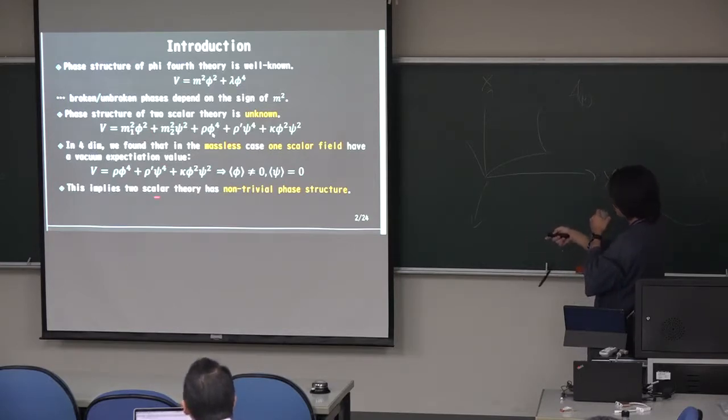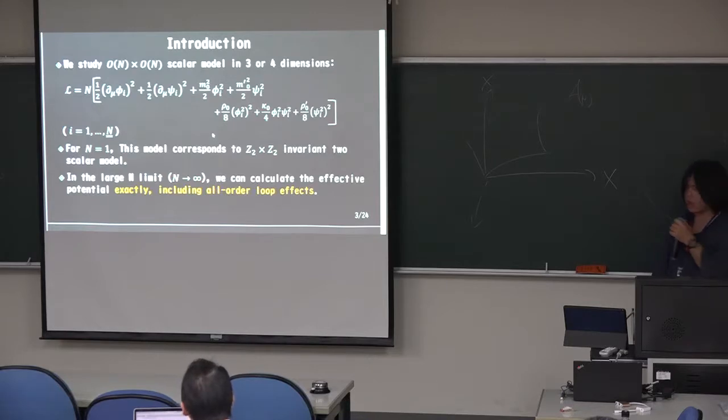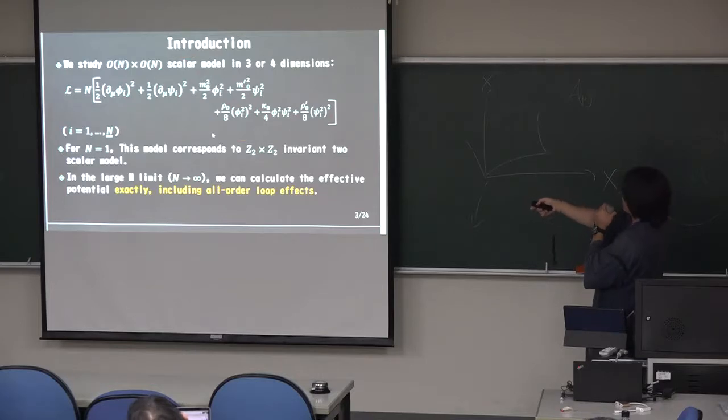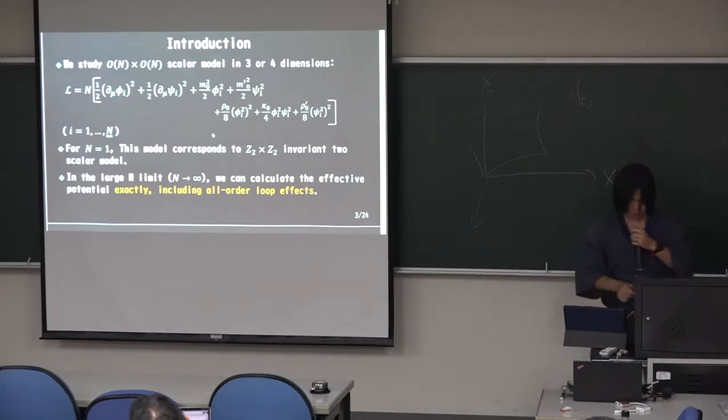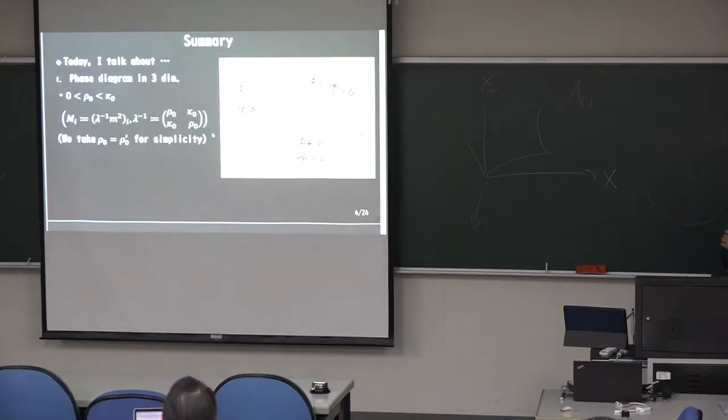This inquiry is, the two scalar theory has a non-trial phase structure. We studied O-L plus O-L scalar model in three or four dimensions. This is, you realize, for simplicity. And these parameters are bare parameters. And for A equal one, this model corresponds to the D2 cross D2 invariant scalar models. So D2 is a critical sign of fields. In fact, in the larger limits, so A goes to infinity, we can calculate the LP potential exactly including all order loop effects.